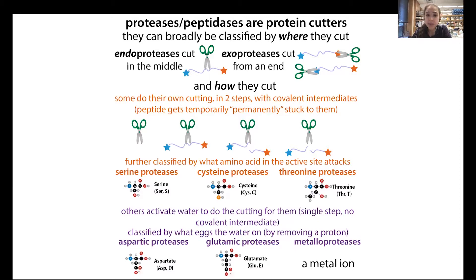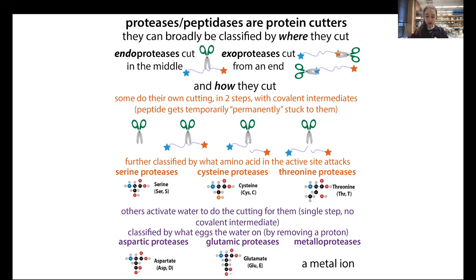Serine and cysteine proteases do their cutting in two steps with covalent intermediates. In step one, half of the substrate gets released and half gets stuck on the scissors. Then water comes in and releases this stuck half and resets everything. In other cases, you activate a water molecule and the water molecule does the cutting for you, so it's not going to get stuck on.